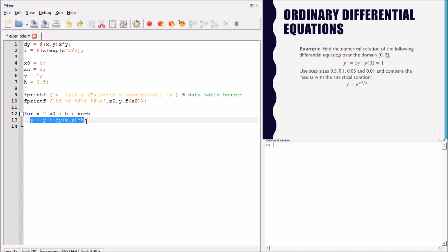This is the Euler formula. We have the y of the current solution, and we have here dy, the differential equation, multiplied by h, in order to compute the value of the next step. And here, we compute x as the next step.